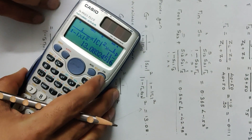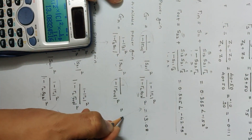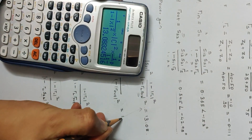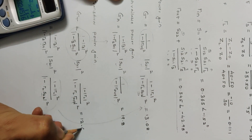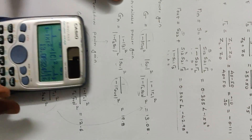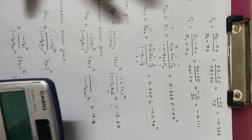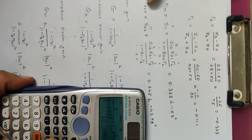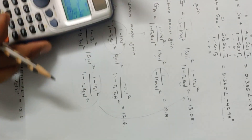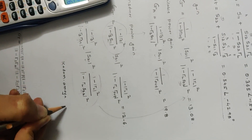On a similar line, calculating the available power gain Ga gives 19.8, and the transducer power gain Gt turns out to be 12.6 — you can verify these calculations. In this lecture we covered how to memorize the gain expressions and calculate them in a simple manner using stored calculator variables. We'll take one more numerical example in the next lecture. For any queries, contact at kadam.ameya@gmail.com.